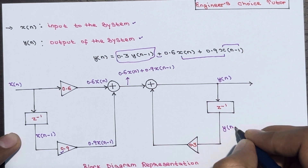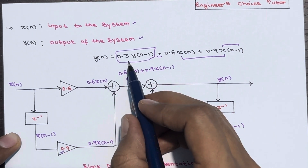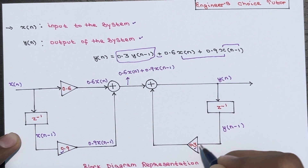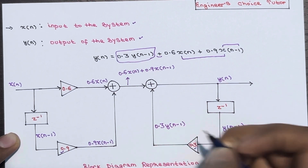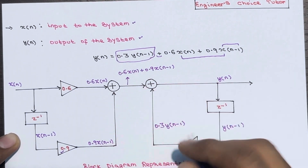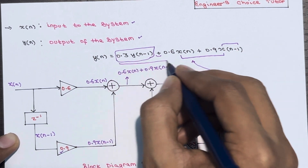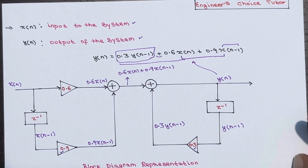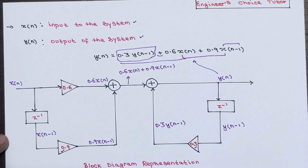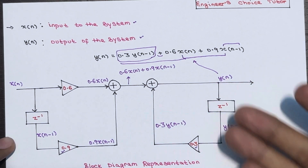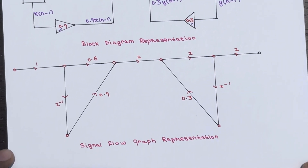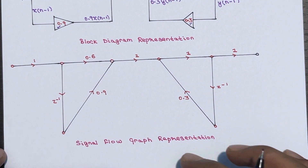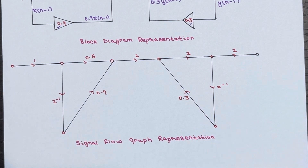For 0.3·y(n-1): at the output node the value is y(n). Pass y(n) through a unit delay element to get y(n-1), then multiply by a constant multiplier of 0.3, giving 0.3·y(n-1). Summing everything, we finally achieve y(n). This is the complete block diagram representation. Similarly, we now draw the equivalent signal flow graph representation.